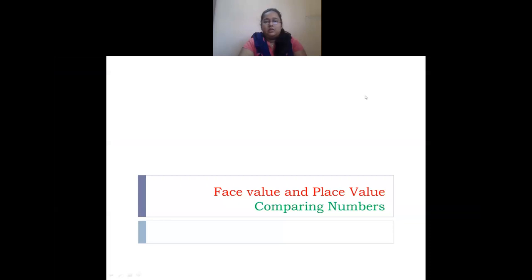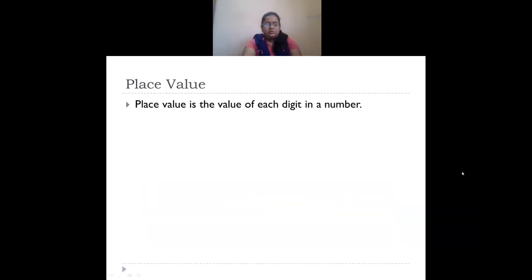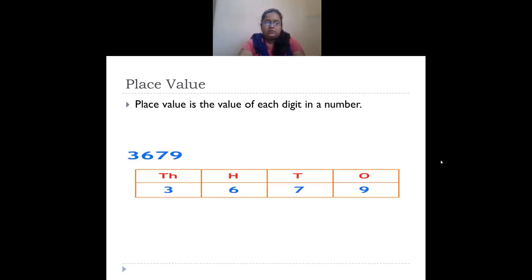First we'll see what is place value and face value. The place value of a digit is the value of each digit in a number. For example, let's take the four digit number 3679. The place values of all four digits: nine is in ones place, seven is in tens place, six is in hundreds place, and three is in thousands place.